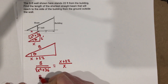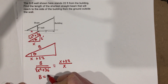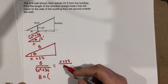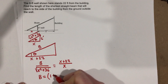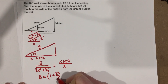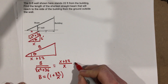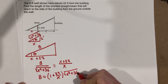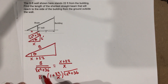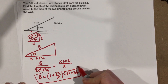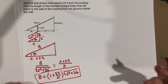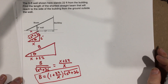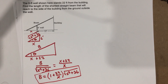Now that we know these two ratios are equal, we can solve for B. B equals 1 plus 22 over x, times root of x squared plus 36. So this is the equation for the beam length using similar triangles.